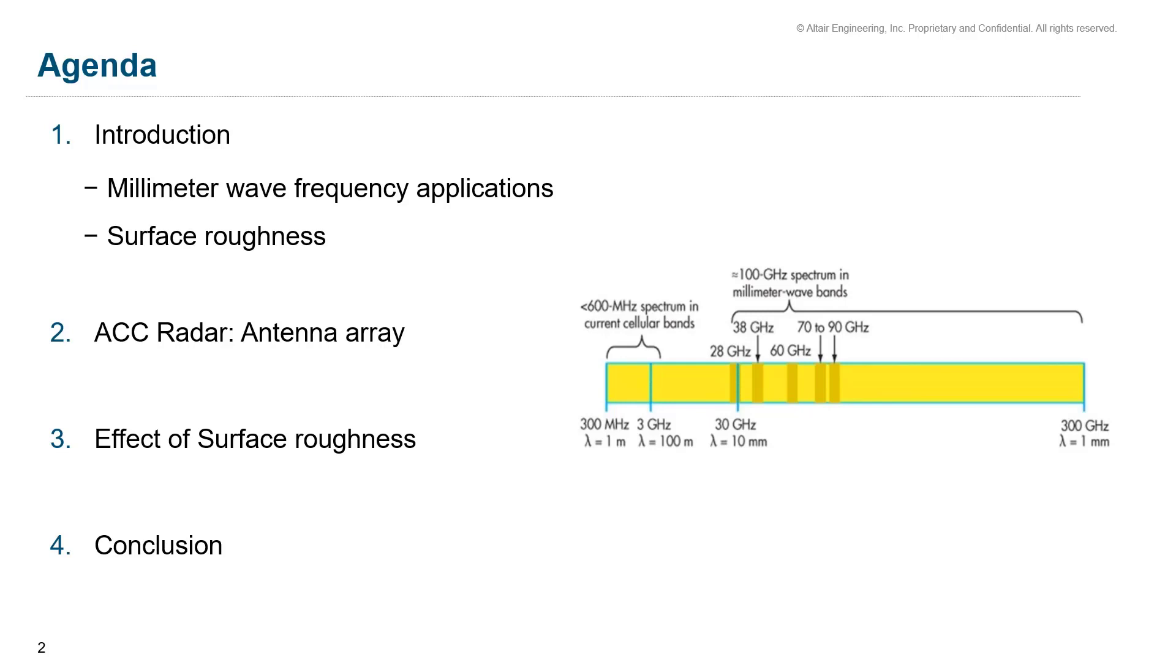In the same section, I shall introduce surface roughness and how it can affect the millimeter wave design for its applications. In the following section, we shall discuss the automotive cruise control radar as an application and study the optimized design of the antenna array.